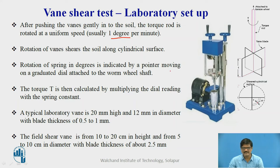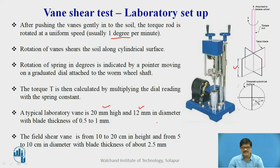A typical laboratory vane is 20 mm high and 12 mm in diameter, with a blade thickness of about 0.5 to 1 mm. Whereas the field shear vane is from 10 to 20 cm in height and from 5 to 10 cm in diameter, with a blade thickness of about 2.5 mm. So for field applications, we have bigger dimensions for these blades.